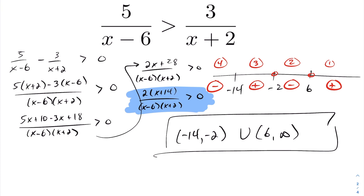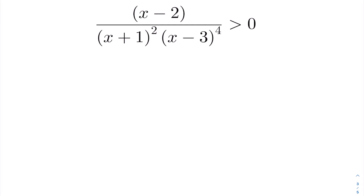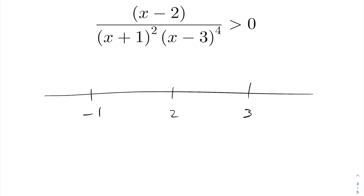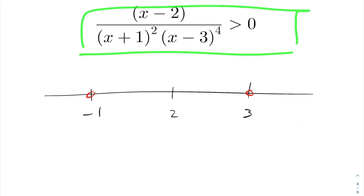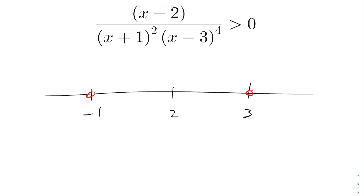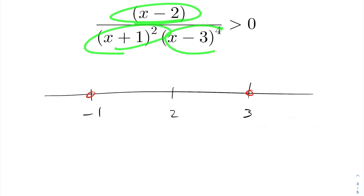Now let's look at an example with even multiplicities. Identifying the values on the number line: I have negative one, two, and three. At negative one and three we place open circles since the expression is undefined there. The question is already factored, so we go straight to analysis. Picking any value greater than three gives a positive number throughout, so the expression is positive in that interval.